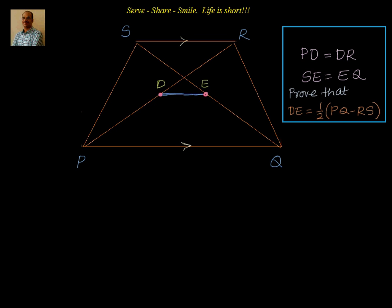We have been given that PQRS is a trapezoid or trapezium. D is the midpoint of diagonal PR and E is the midpoint of diagonal QS. We have to prove that the line segment joining D and E is equal to half of PQ minus RS. In other words, the line segment joining the midpoints of the diagonals is equal to half of the difference in length between the parallel sides of the trapezium. So I have to prove that DE is equal to half of PQ minus RS.